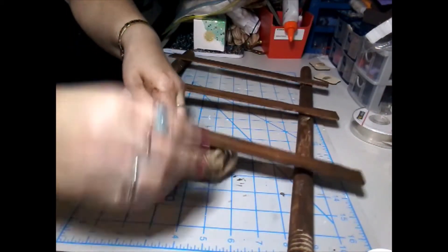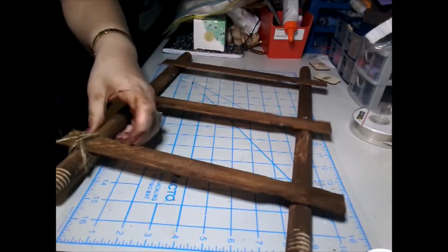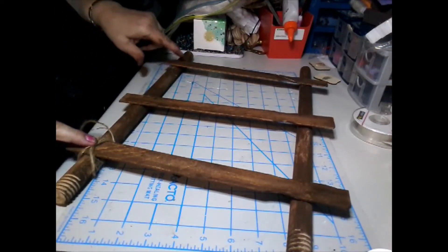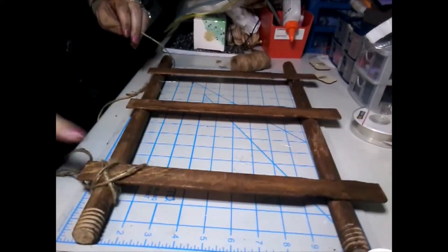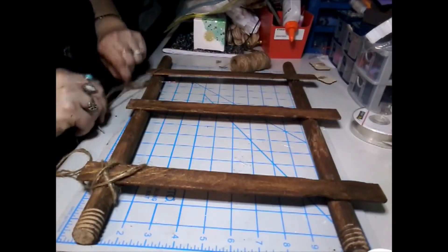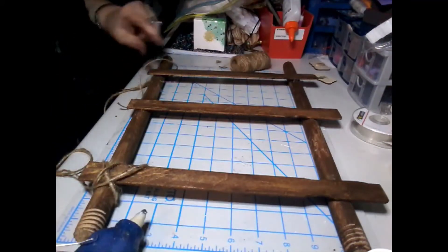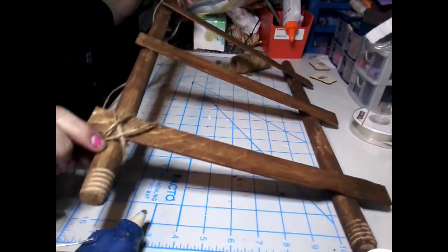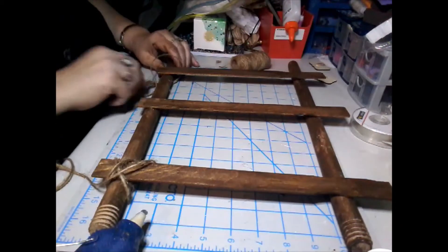This will just help hold it in place better and it'll give it a little rustic look. I'm going to go ahead and start on my other corners and just showing you how I'm doing. I'm going to go ahead and do the top with some little hot glue so that I can get it to stay together a little bit better, and then I'll do the middle one.